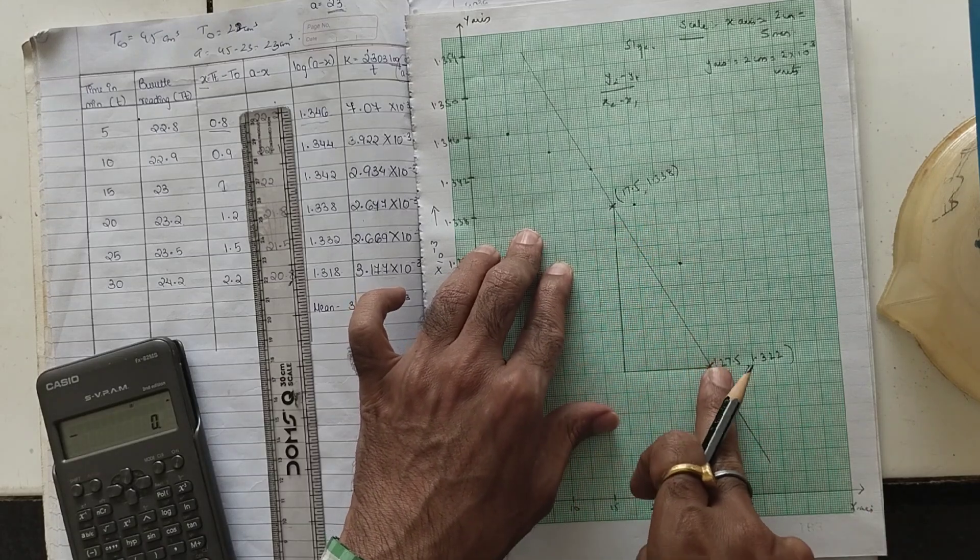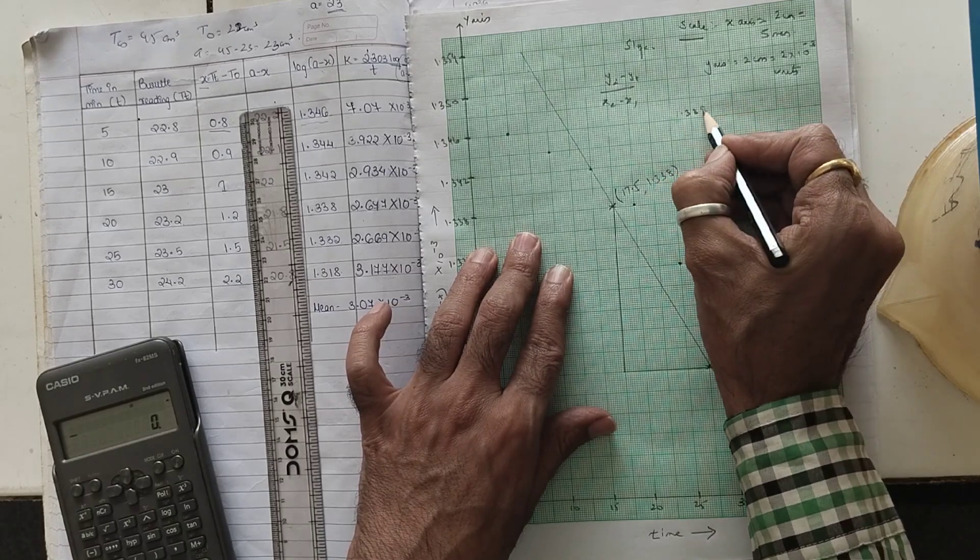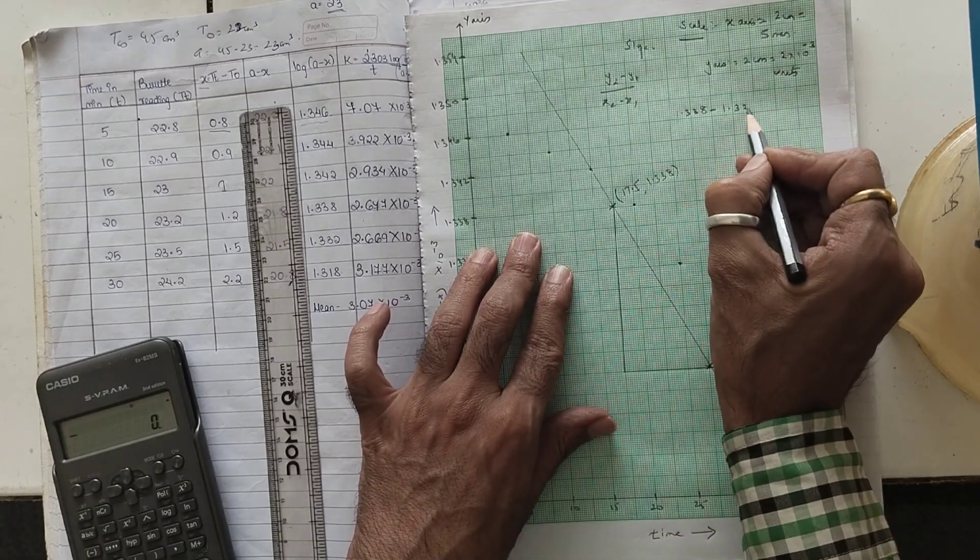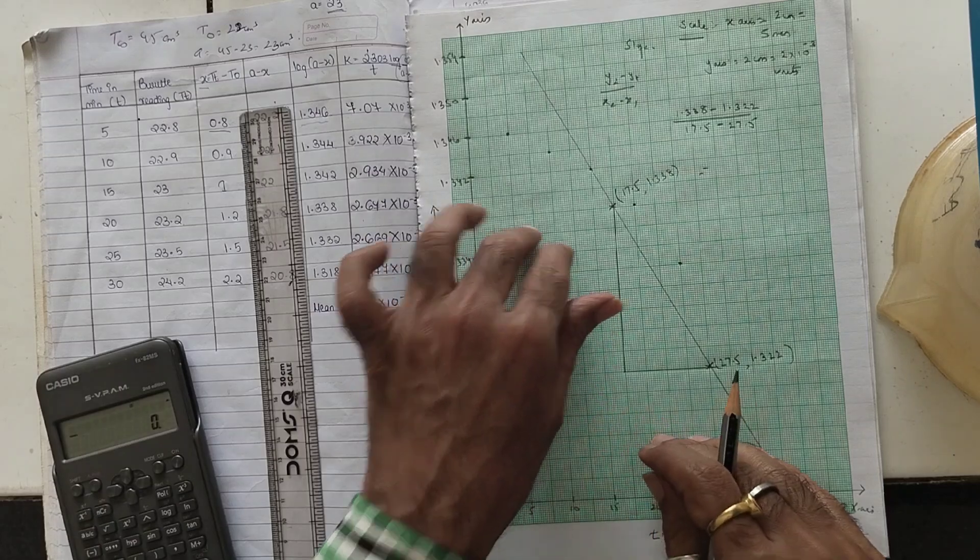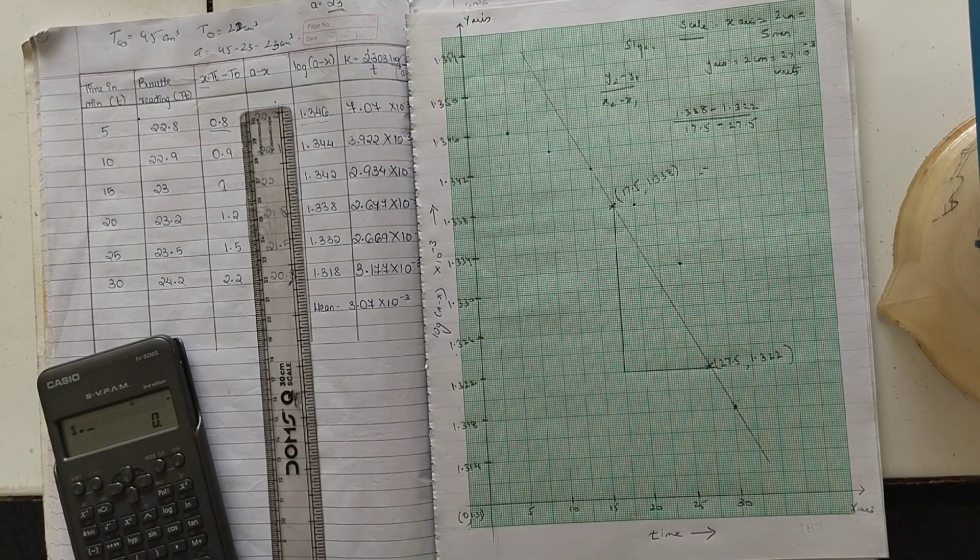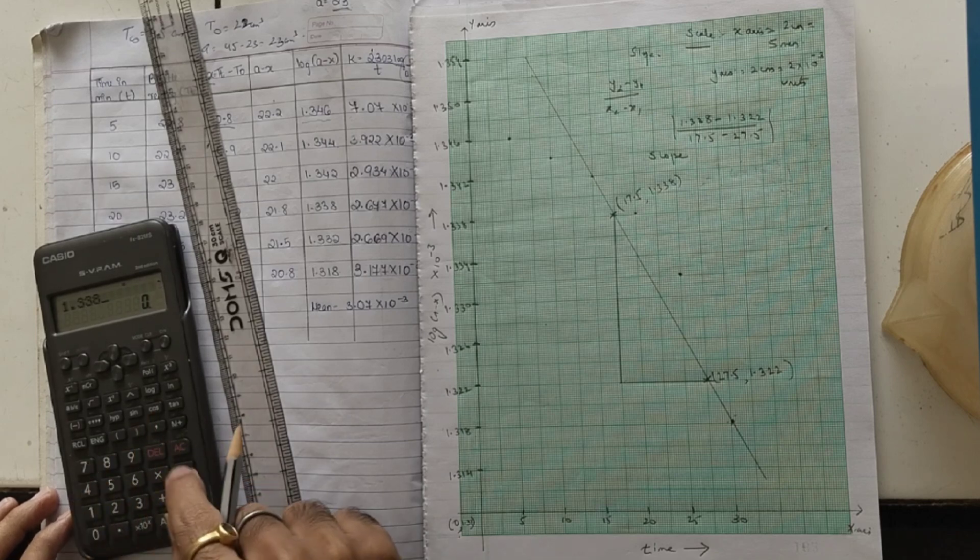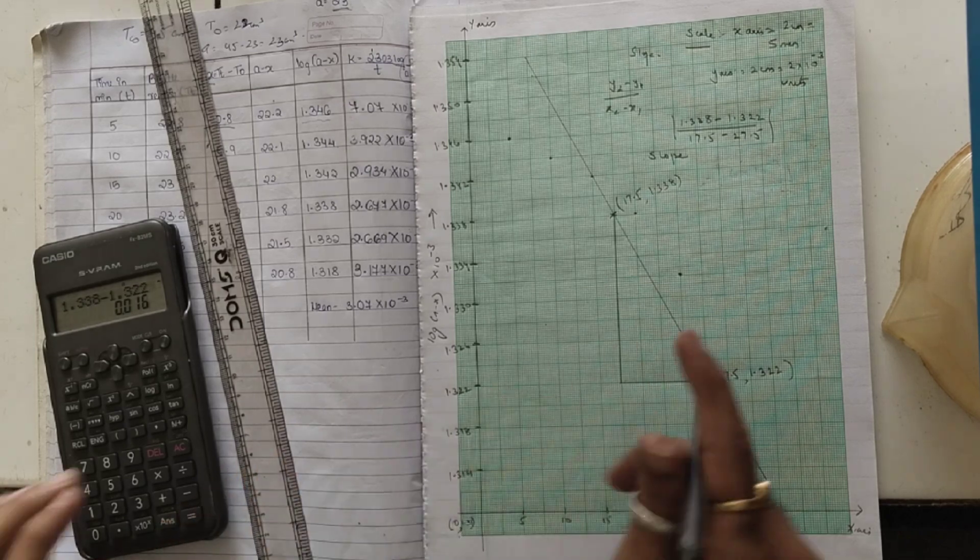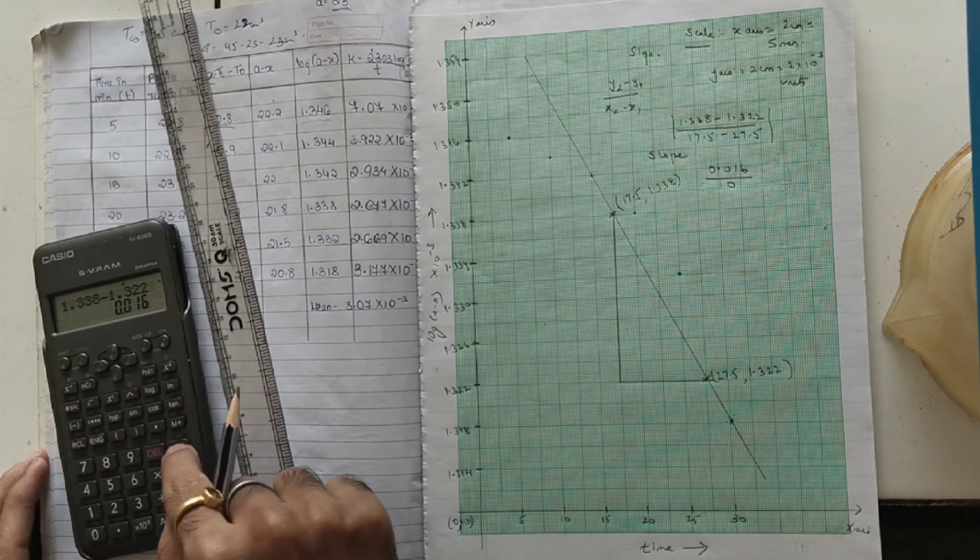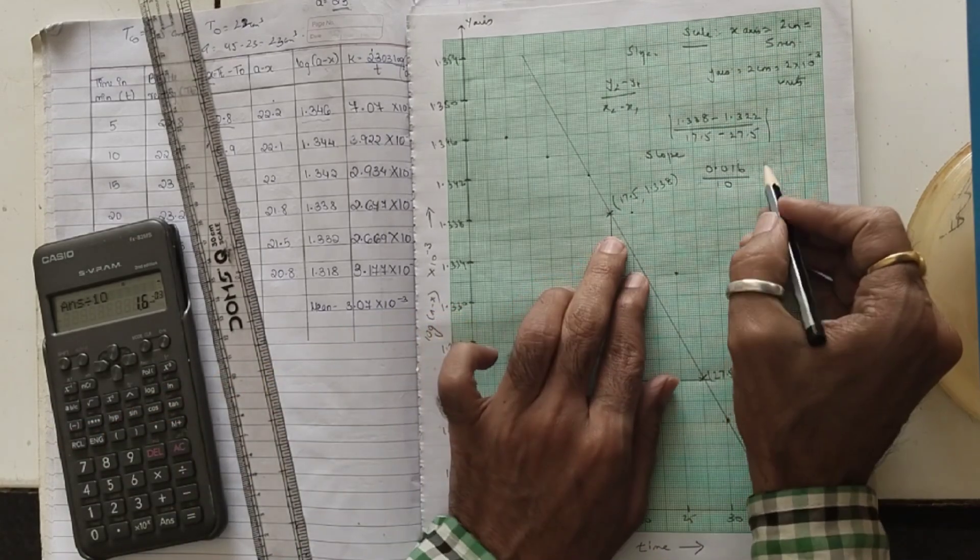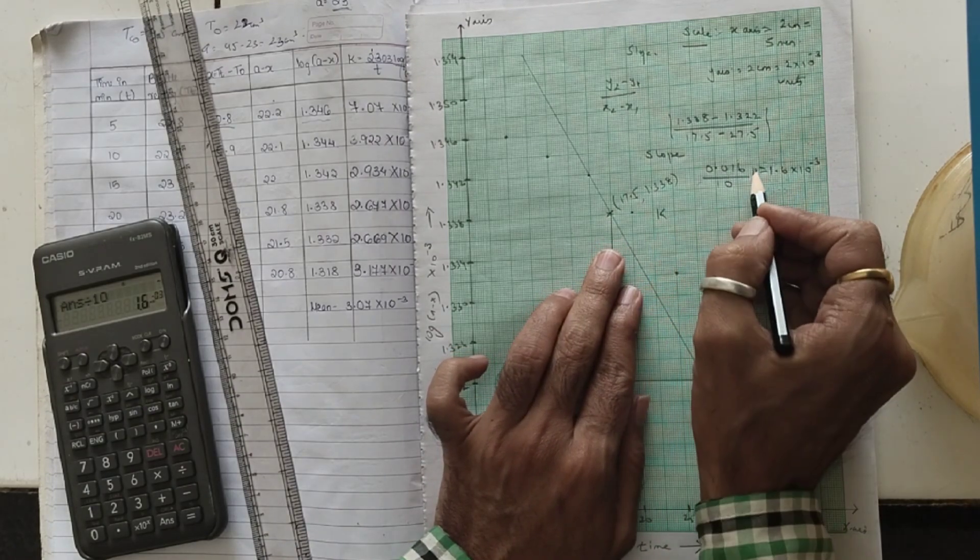So accordingly, if I consider one and this is two, so Y2 minus Y1 gives me 1.338 minus 1.322 divided by 17.5 minus 27.5. If you do the calculations, 1.338 minus 1.322 gives us 0.016, that is going to be divided by 10, so divided by 10 this gives us 1.6 into 10 raise to minus 3. This is the slope.